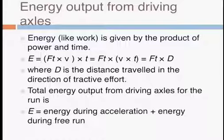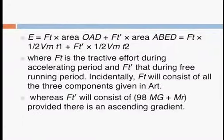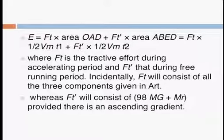The energy output, assuming a trapezoidal speed-time curve, the total energy run matter required will be the acceleration period energy plus the free run period energy. We can elaborate this as average power during acceleration multiplied by the acceleration period, plus average power during free run multiplied by the period of free run. The final equation we get will be: E = (1/2) × Ft × Vm divided by 3600, multiplied by T1 divided by 3600, in kWh.